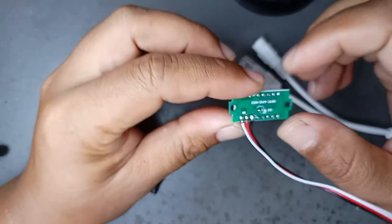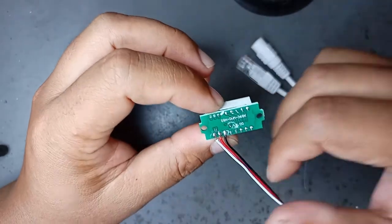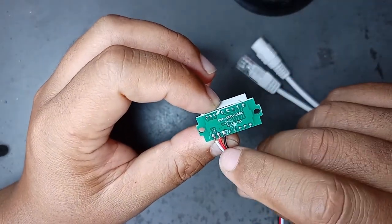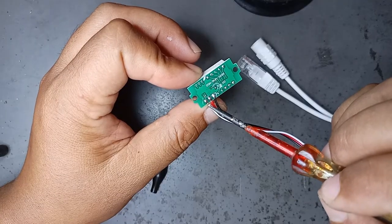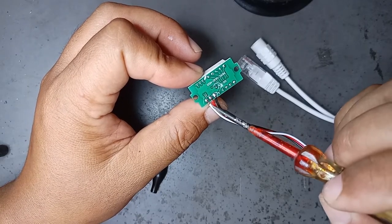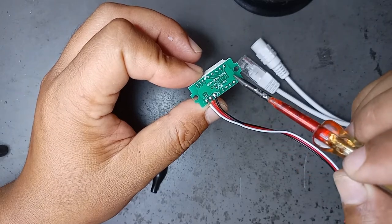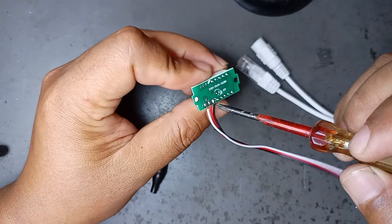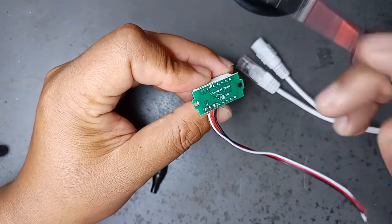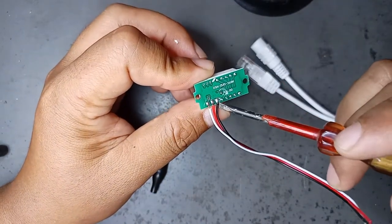This voltmeter has 3 input points. The white one is for measuring. The red one is for powering the voltmeter so it lights up. And the black one is for negative or ground.